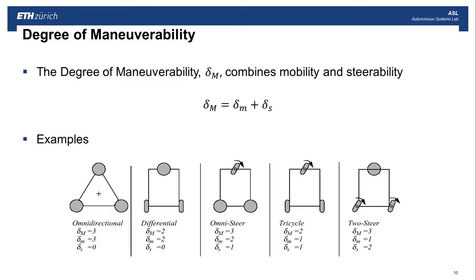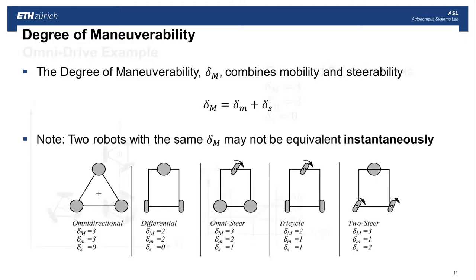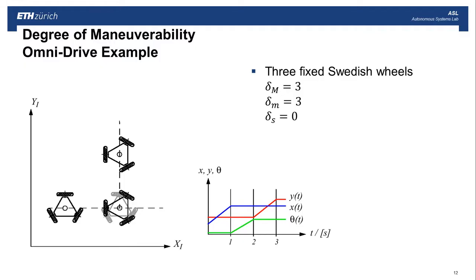Now the degree of maneuverability combines these two metrics. So it's literally just the sum, the degree of mobility plus the degree of steerability, and that is the degree of maneuverability. And we have some examples on the bottom, like the omnidirectional robot with three spherical wheels has a degree of maneuverability 3, and so on for common robot configurations. Note that two robots with the same degree of maneuverability may not be equivalent instantaneously.